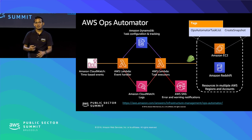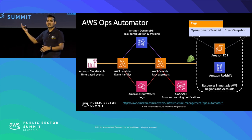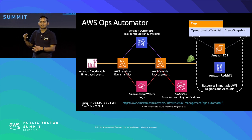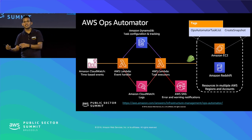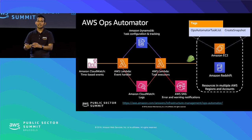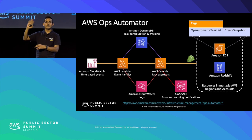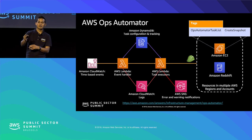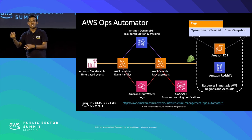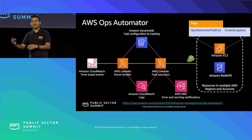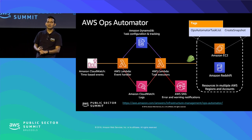AWS Ops Automator is a serverless framework for automating operational tasks like EBS or Redshift snapshots and backups. A cron-based CloudWatch Events schedule triggers a Lambda function that checks a DynamoDB configuration table for scheduled jobs, then triggers the appropriate backup Lambda functions. The Lambda function updates the DynamoDB table on completion and sends a notification. Since it's serverless, you pay only when it runs, not for a server continuously polling.